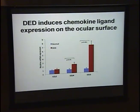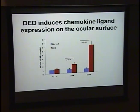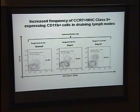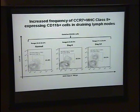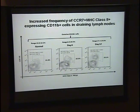We next looked at the expression of chemokine ligands on the ocular surface, including both the conjunctiva and the cornea, and found a statistically significant increase in the expression of CCL4 and CCL5. Using flow cytometry, we also looked at the frequencies of CCR7 on mature antigen-presenting cells in draining lymph nodes. CCR7 facilitates trafficking to the lymph node, and we saw a progressive increase in the frequency of this population to day 4 and even more so at day 12.